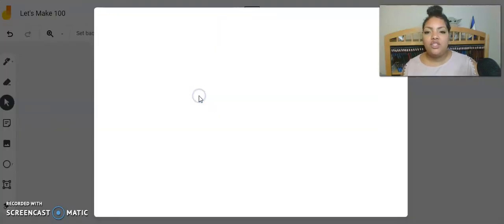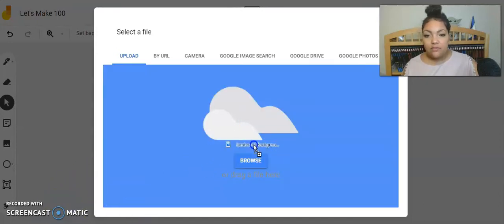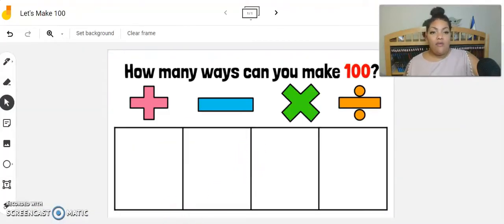And now I will set the background. I'm going to choose image. And when this happens, since I have my download already down here, I can just drag it up and drop it. If I did not have that download there, then I would be able to upload it by clicking upload and then going into my computer to find the file.